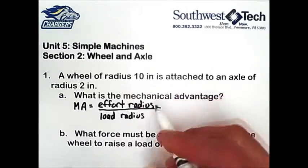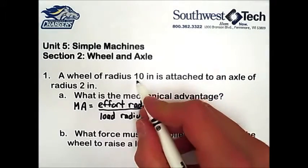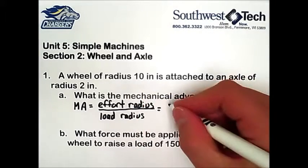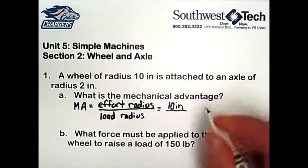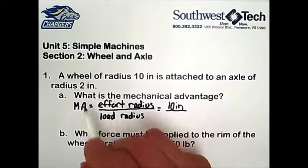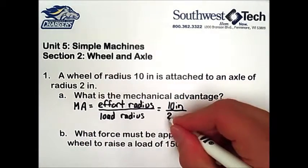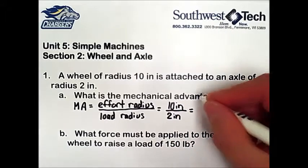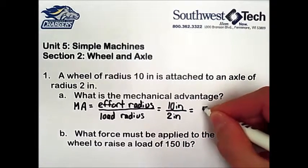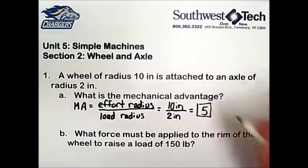Substituting in for the effort radius: the effort radius will be the radius of the wheel, which is 10 inches. The load radius is going to be the radius of the axle, which is 2 inches. So dividing 10 by 2, we end up with a mechanical advantage of 5.